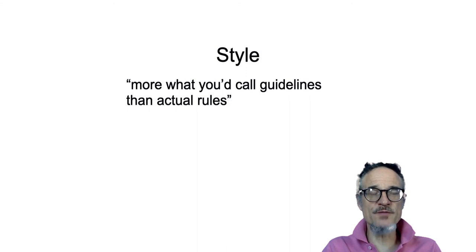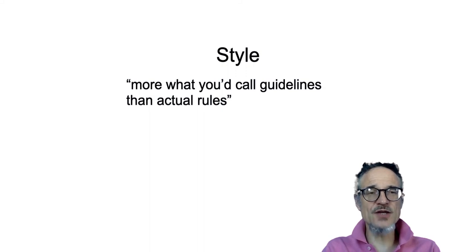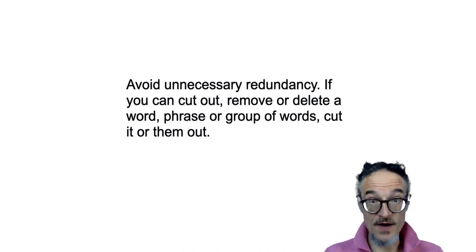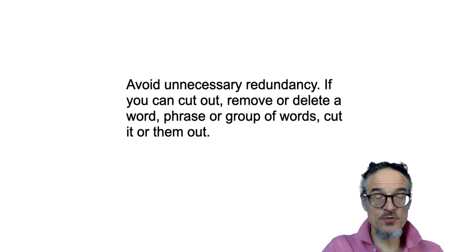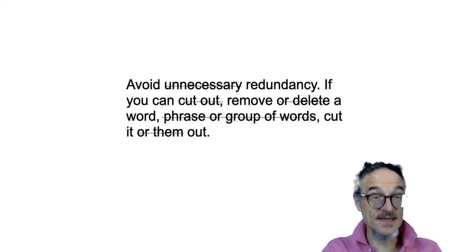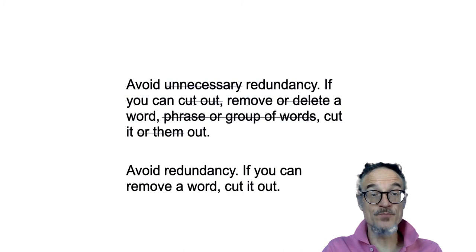Those are all rules — things that you must do, where there's a right and a wrong. There's also what's called style, which is more guidelines about what you should do. For example, a sentence may have correct grammar and correct spelling, but there are words in it that we don't really need — unnecessary redundancy. Redundancy means it's unnecessary. Cut out, remove, delete the words you don't need. Avoid redundancy — if you can remove a word, cut it out.